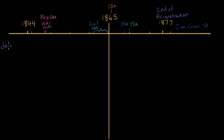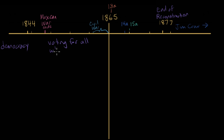All right, first: democracy. In the years before the Civil War, what were the prevailing ideas about who should be able to vote, and who actually could vote in practice? Well, by 1844, most states had extended voting rights to all white men, regardless of property ownership. Women couldn't vote, and neither could enslaved Africans in the South. And voting rights for free African American men in the North were pretty limited.